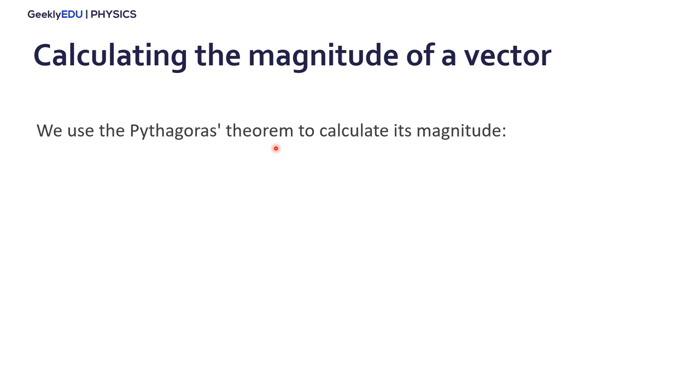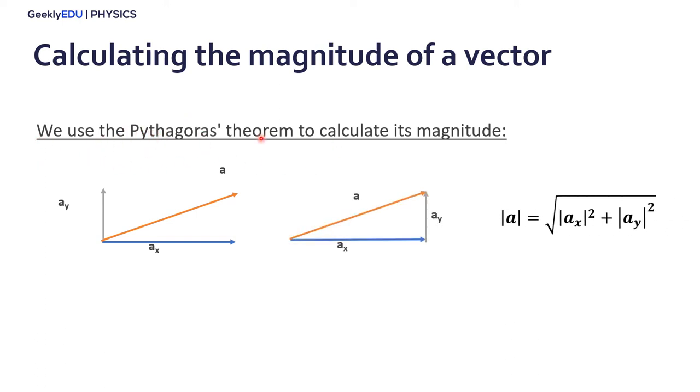And how do we calculate the magnitude of a vector? Well, we can use the Pythagorean theorem to calculate its magnitude. So, if you take a look at this example here, vector a has the x-component and y-component. We can think of this as a right triangle. And applying the Pythagorean theorem to this right triangle, we get this formula here to calculate the magnitude of a vector.